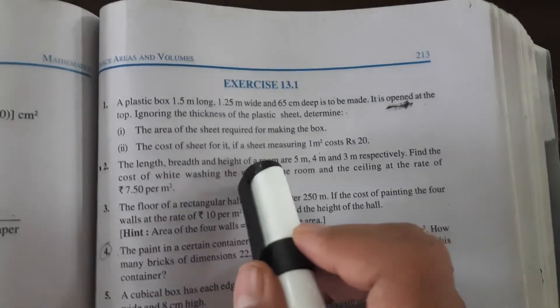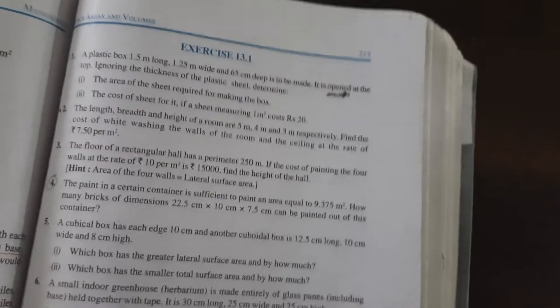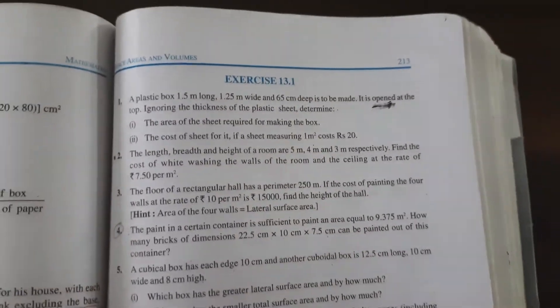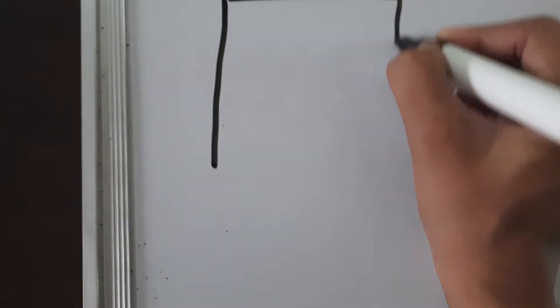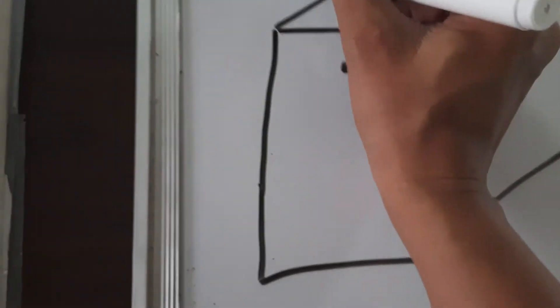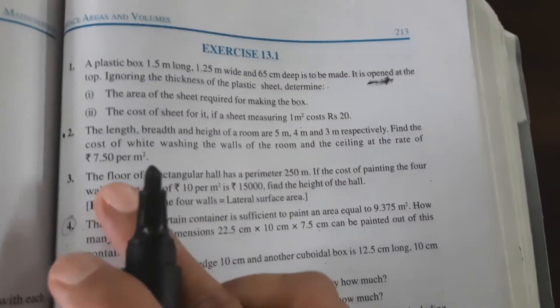Third question: the floor of a rectangular hall has a perimeter of 250 meters. The hall is in rectangular form with length, breadth and height of wall. The perimeter given is for the floor, which is rectangular, so the base is of rectangular shape with length L and breadth B.